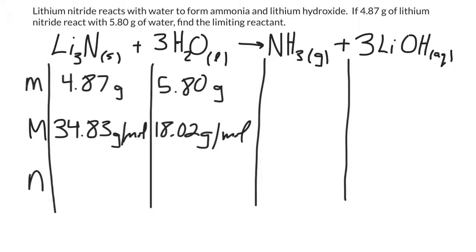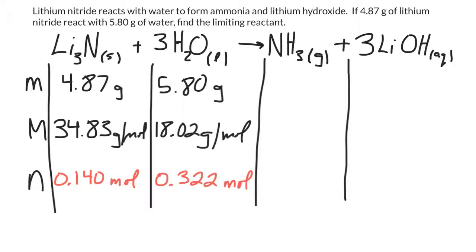My next step is to calculate the number of moles of each of my reactants. Remember, moles is mass divided by molar mass. So for lithium nitride, 4.87 grams divided by 34.83 grams per mole gets me 0.140 moles. I do the same thing with water — mass divided by molar mass — and it ends up being 0.322 moles.